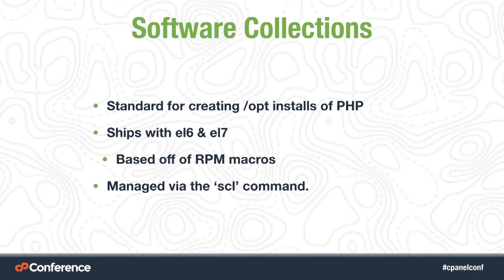Now we're going to talk about Software Collections. Software Collections are a standard created by Red Hat for creating alternate installations of software on a system. Using Software Collections, we're able to distribute PHP 5.2, 5.3, 5.4, 5.6, and even PHP 7 all in the same system at the same time. This is done by placing a file system inside /opt that can be used and triggered via the SCL command for loading alternate versions. We chose Software Collections because being created upstream means you have documentation and examples that we could never provide.